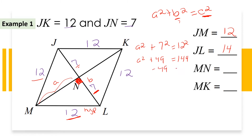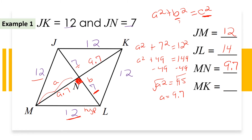Solving: 7 squared is 49, 12 squared is 144. Subtracting 49: a squared equals 95, so a is approximately 9.7. So MN is 9.7, and since NK is also 9.7, MK equals 9.7 plus 9.7, which is 19.4. I have found all the measures of this rhombus.